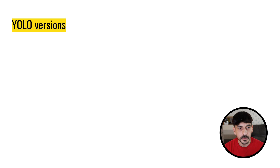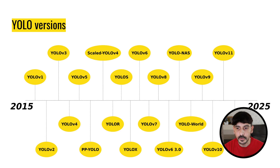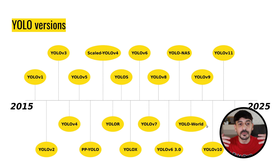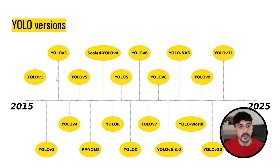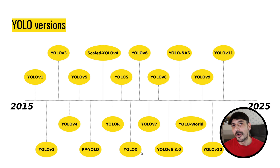Regarding all the different versions of YOLO, this is a very quick summary of all the different versions which have been released over the years. You can see that this is definitely a lot of different versions of YOLO: YOLO v1, YOLO v2, YOLO v3, v4, v5, PP YOLO, Scaled YOLO v4, YOLO R, YOLO S, YOLO X, and so on.